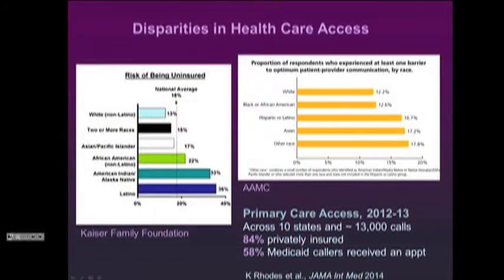We also see disparities in health care access. The risk of being uninsured is much lower for whites than for non-whites, and the risk of difficulty communicating with a health care provider is also higher for non-whites, which can include language barriers. An interesting study by Karen Rhodes and colleagues made about 13,000 phone calls across 10 states to make primary care appointments. They found that 84% of those with private insurance got an appointment, but only 58% of those on Medicaid — suggesting that the type of insurance matters, and perhaps some discrimination as well.